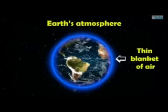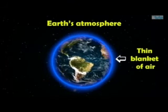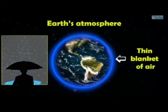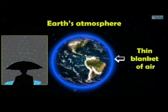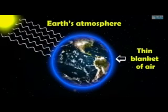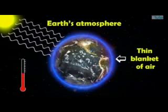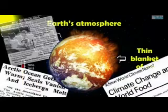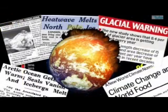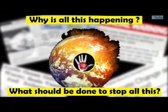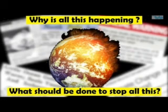This air is a mixture of many different gases. Just like an umbrella which protects us from sun and rain, this thin layer of air protects Earth from the harmful radiations from the sun. But this stable temperature is rising every passing year. Oceans are getting warmer, a significant shift in the climate is seen, and glaciers are melting. Why is all this happening, and what should be done to stop it? We will find the answers through this session.